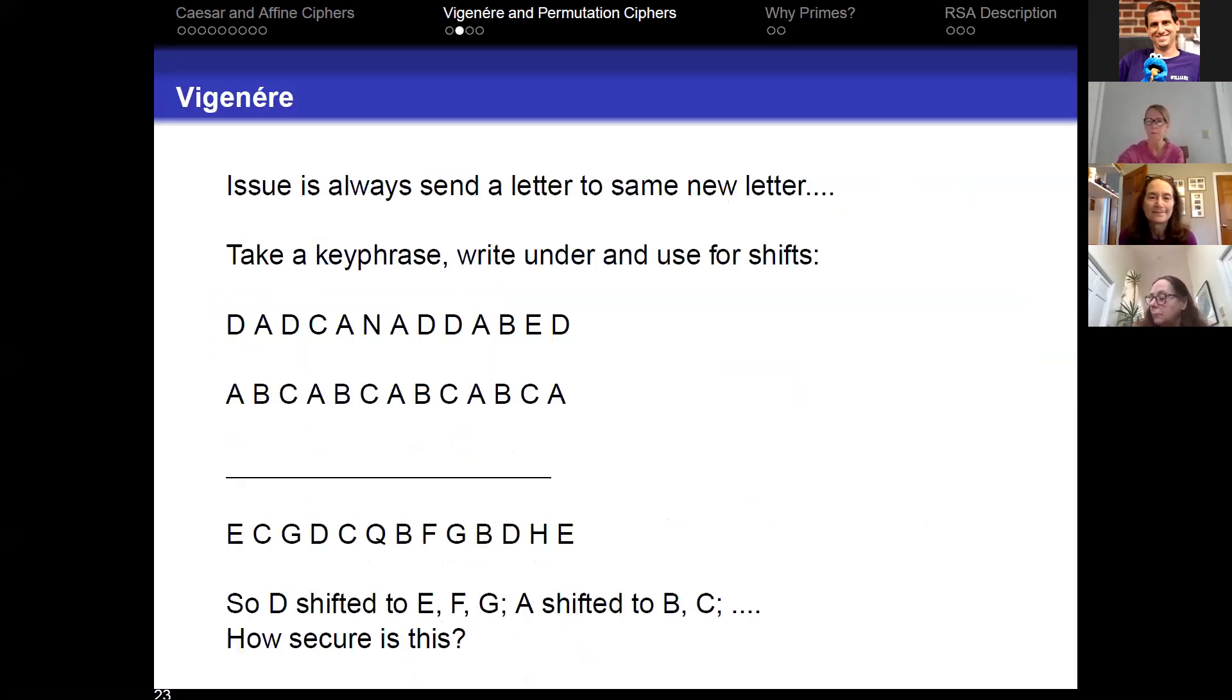So the issue is that we are always sending a letter to the same new letter. Maybe E is always encrypted to a Z, B is always encrypted to a Q, and because of this there's only 26 things somebody needs to figure out. And because each letter is constantly encrypted to the same thing, as was remarked earlier, maybe you can do a frequency analysis. E is the most common letter in English words. T-H-E is the most common three letter word. If you have spaces, you can use this to try to figure out what some of the letters are. And then as you crack those letters, you fill that in and you try to figure out the other words.